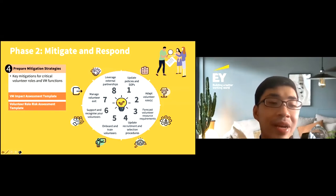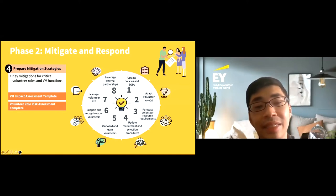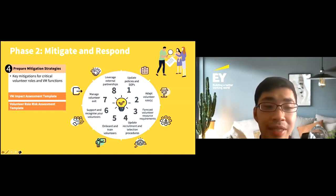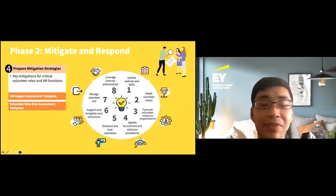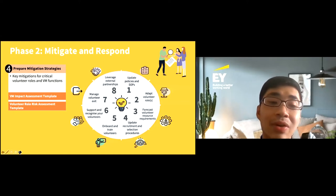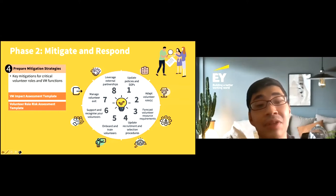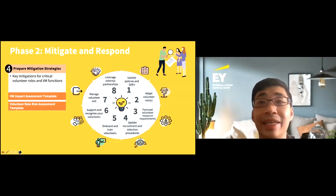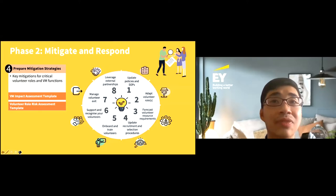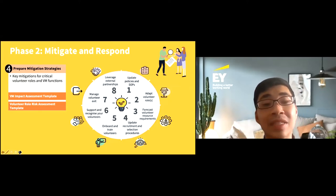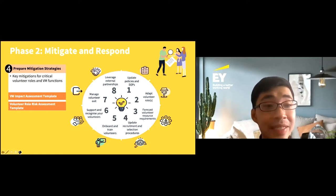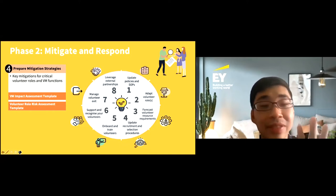For step four, prepare mitigation strategies, the VCP guide details the key types of mitigations to put in place to ensure continuity of volunteer management processes and services. For example: updating policies and SOPs for safe distancing during a COVID crisis; adapting and redesigning volunteer roles so volunteering can continue in a virtual format; and forecasting volunteer resource requirements. I'll focus on that third mitigation — forecasting resource requirements.